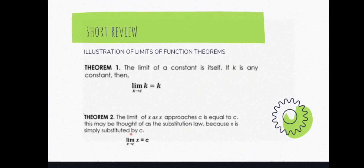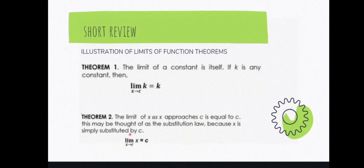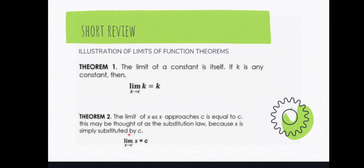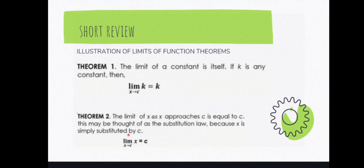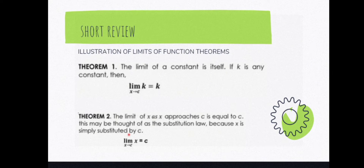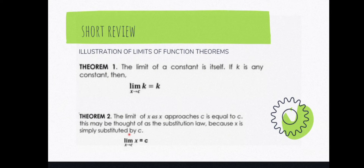Let's have a short review about the 9 theorems that we have in the limit of a function. We have Theorem 1: the limit of a constant is itself. If k is any constant, then the limit of k as x approaches c is equal to k.